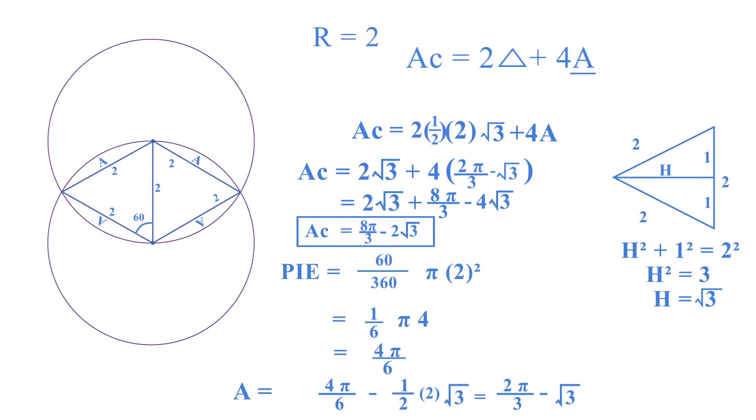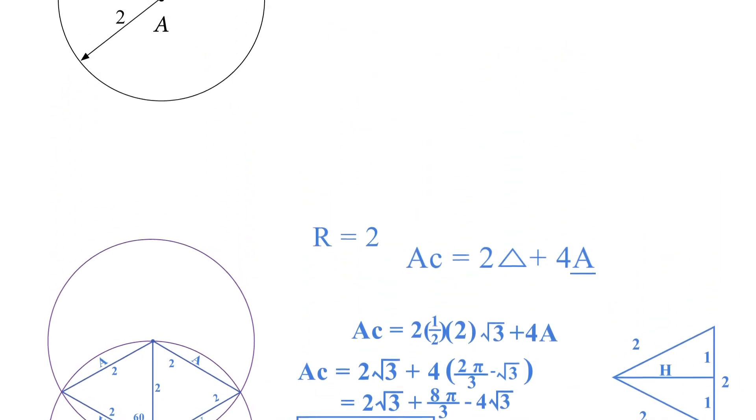What did we get for our AC, our common region? We got right here 8π/3 - 2√3.